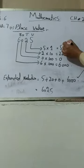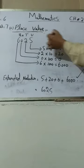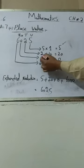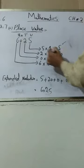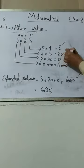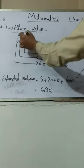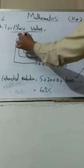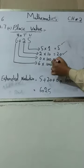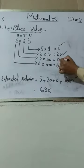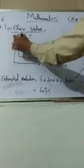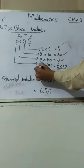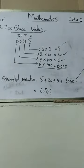So the place values are: 5 in unit place has place value 5, 2 in tens place has place value 20, 0 in hundreds place has place value 0, and 6 in thousands place has place value 6,000. This is how we find place values for each digit in a given number. Students, I am sure you will understand this concept well.